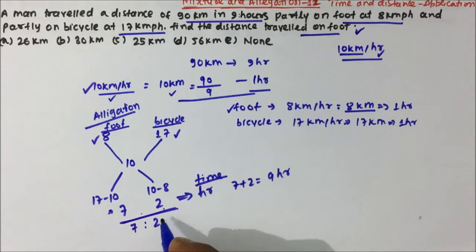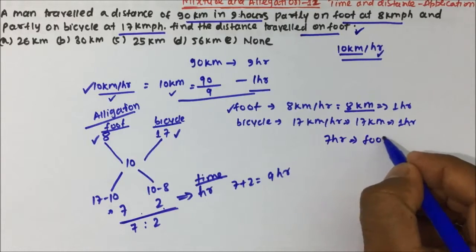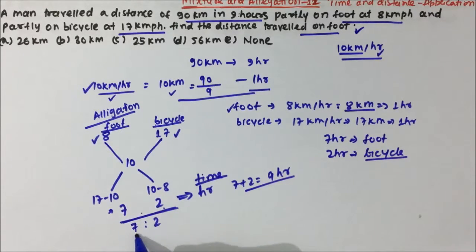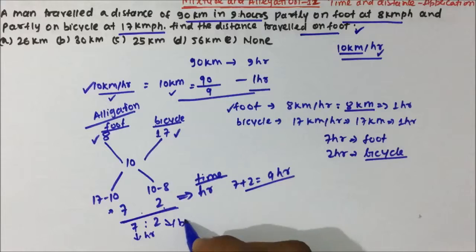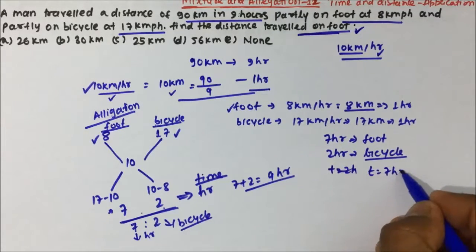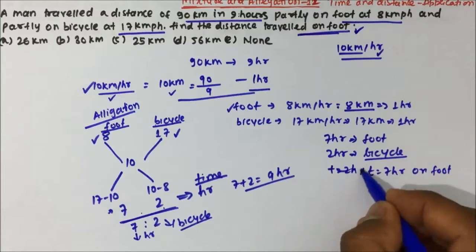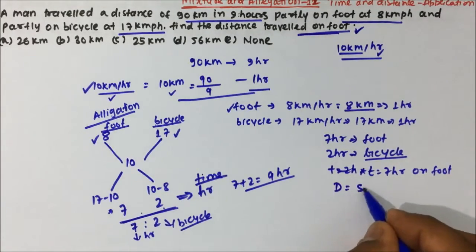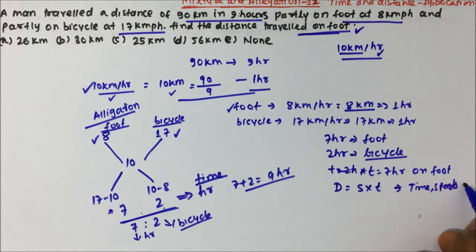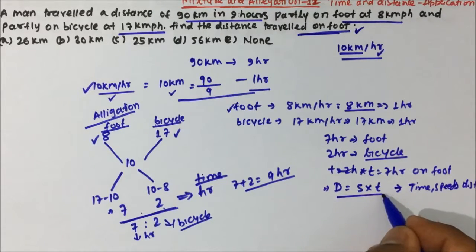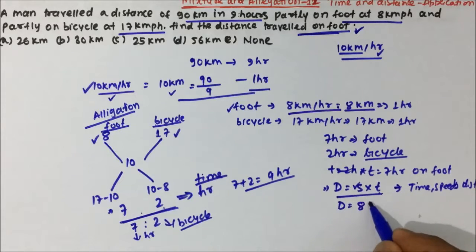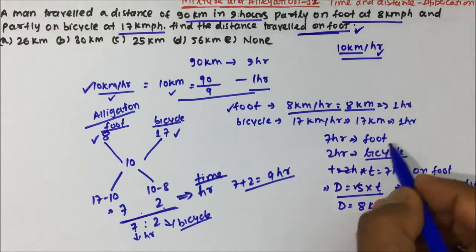So the ratio 7:2 is the time ratio. That means the person travelled 7 hours on foot and 2 hours on bicycle — total 9 hours. The question asks for the distance travelled on foot. We have the time: 7 hours on foot. Using the formula Distance = Speed × Time, we can now calculate the distance.